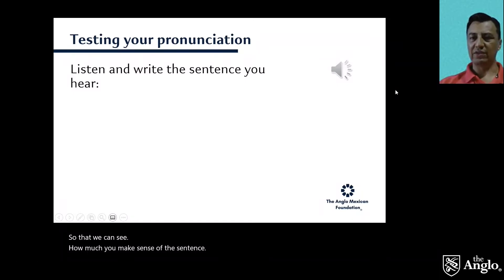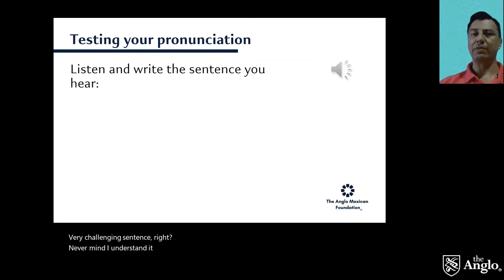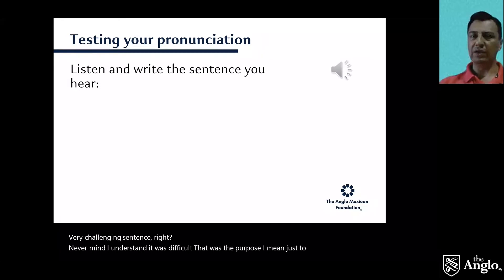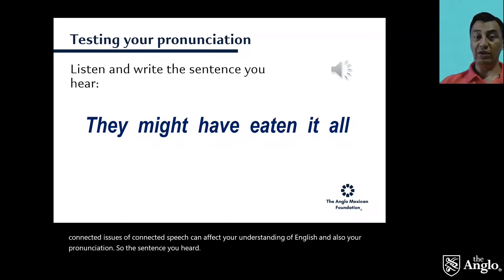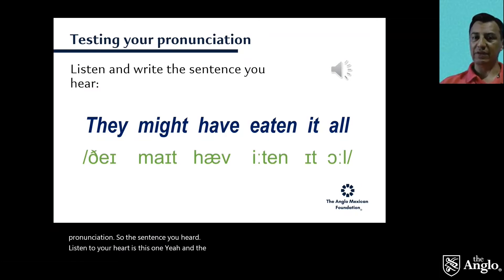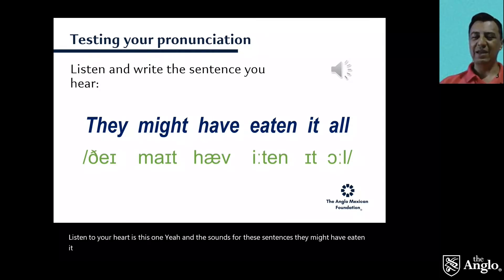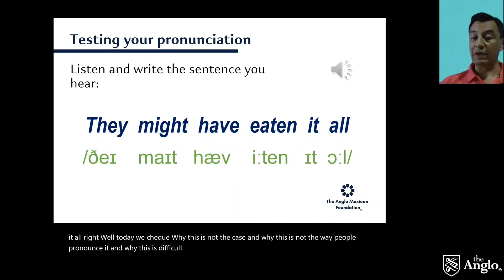It's a very challenging sentence, right? I understand it was difficult — that was the purpose, just to see how connected speech can affect your understanding of English and also your pronunciation. The sentence you heard is 'They might have eaten it all.' Today we'll check why this is difficult for foreign speakers and why people don't pronounce words in isolation the way we might expect.